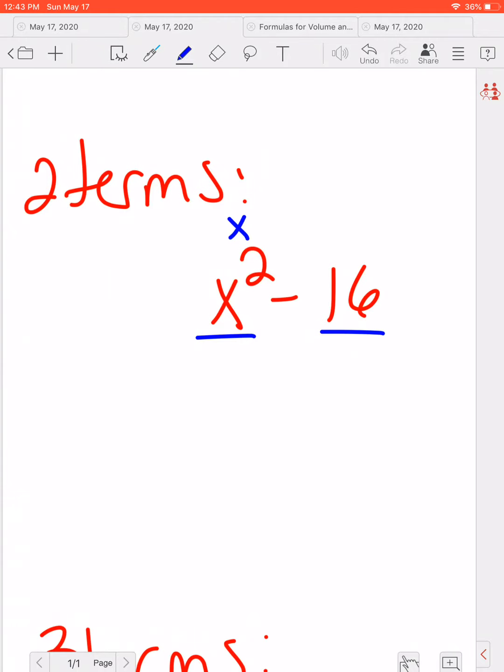So X times X gives me X squared and 4 times 4 gives me 16. So I make my two sets of parentheses. I'm going to put an X and an X here. I'm going to put a 4 and a 4 here and 1 plus and 1 minus. I'm not 100% sure if we did difference of squares in this chapter with you guys. If we didn't, just skip this part. If we did, there's your review.